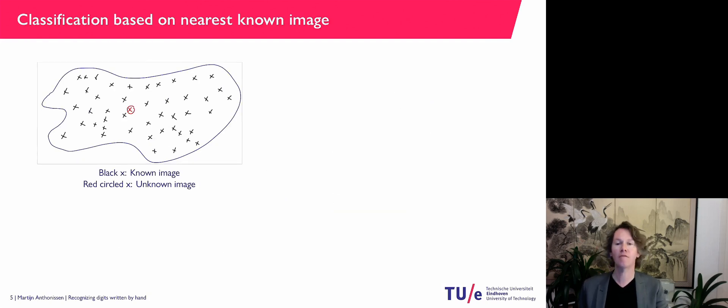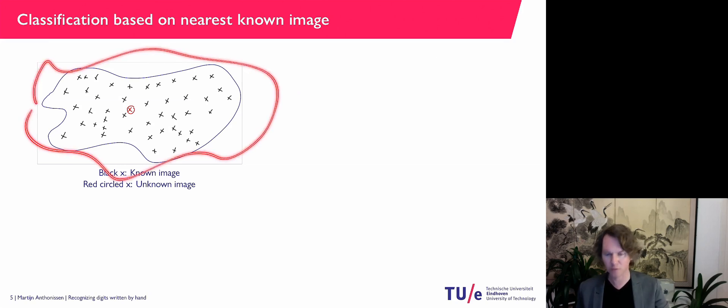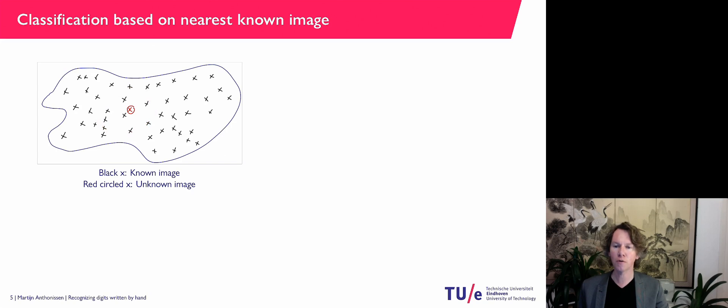So what we do is, symbolically, what we have is our space here. So this is our R^256. All the little black crosses are known images. And we have a new unknown image. And what we do is, for the unknown image, we represent it as a vector.